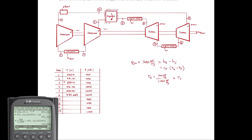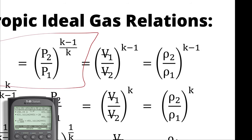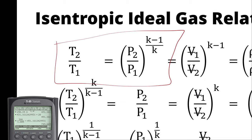We've made it through the high-pressure side and can begin the expansion process. Assuming the turbines split the load evenly with the same expansion ratio as the compressors, and using isentropic ideal gas equations: T7/T6 = (1/4)^((k−1)/k). So T7 = 749.669 × (1/4)^(0.4/1.4) = 504.49 K.